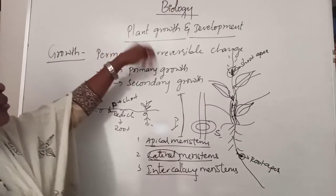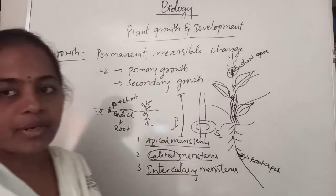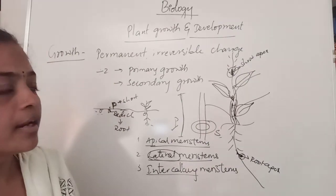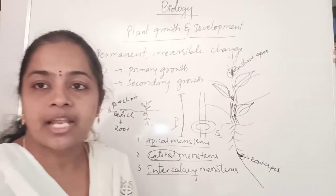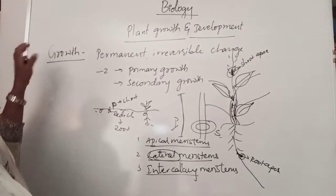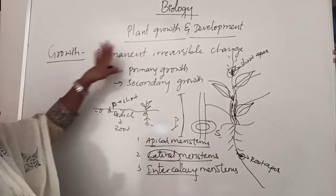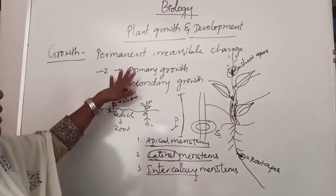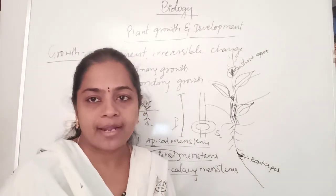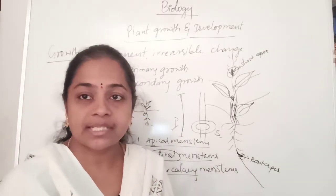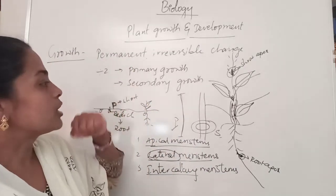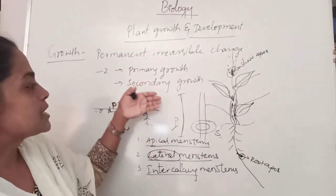So, plant growth is present in the development of a plant. Growth is a permanent, irreversible change of an organism. There are two types of growth: primary growth and secondary growth. Primary growth is the growth which takes place in the initial stages of the plant.